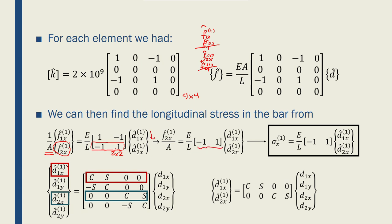is basically the second row of that matrix. E over L is the constant here. And this vector is exactly copied there. Now I know that f2x1 over A is the stress from the definition of stress. E over L times [minus 1, 1], and the vector of the local displacements give me the stress.